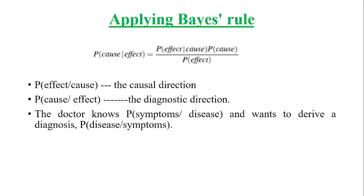Let us see how to apply Bayes' rule. Suppose we want to perceive the effect of some unknown cause and we want to compute that cause. Then Bayes' rule becomes P of cause given effect equals P of effect given cause into P of cause divided by P of effect. The conditional probability P of effect given cause quantifies the relationship in the causal direction, whereas P of cause given effect describes the diagnostic direction. In medical diagnostics, we often have conditional probabilities on causal relationships. The doctor knows P of symptoms given disease and wants to derive a diagnosis P of disease given symptoms — that is, he wants to diagnose the disease.